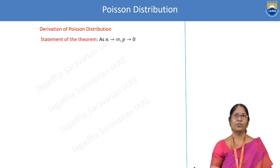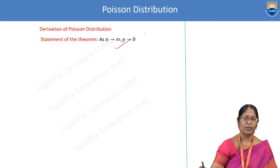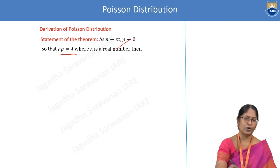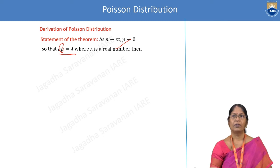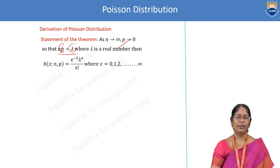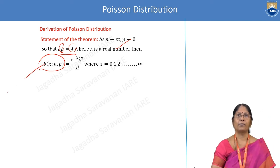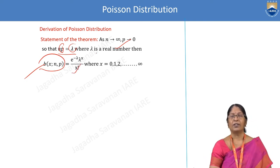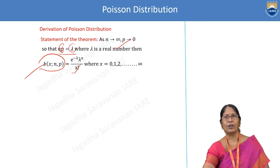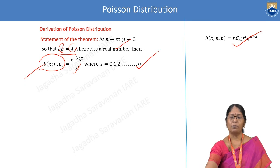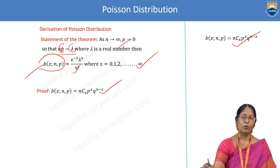The derivation of Poisson distribution — it is derived from the binomial distribution. That is, NP = λ. We know NP is the mean of the binomial distribution, so the mean of the binomial distribution equals λ, where λ is a real number. From the binomial distribution, the Poisson formula e^(−λ) · λ^x / x! is derived, where x takes values from 0 to infinity. We will prove it now.